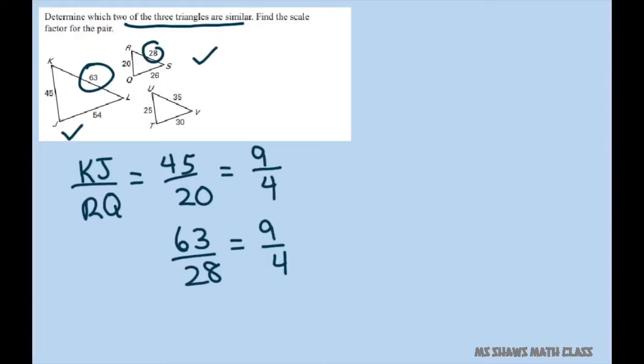And that one was KL divided by RS. And so let's try the last part, JL divided by QS. And that's going to give you 54 divided by 26. And divide both of those. Let's see what we can divide by. Let's first divide by 2.